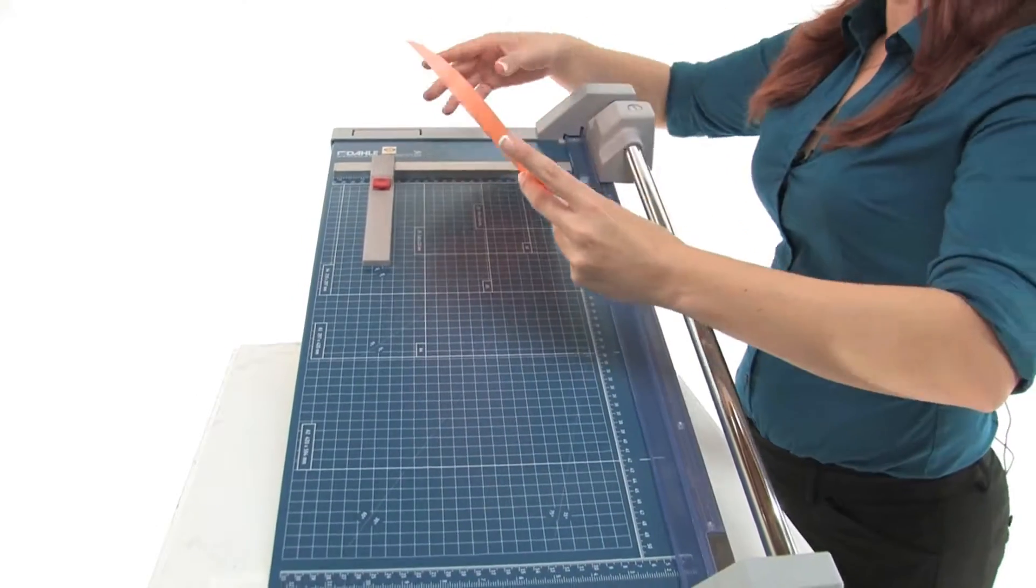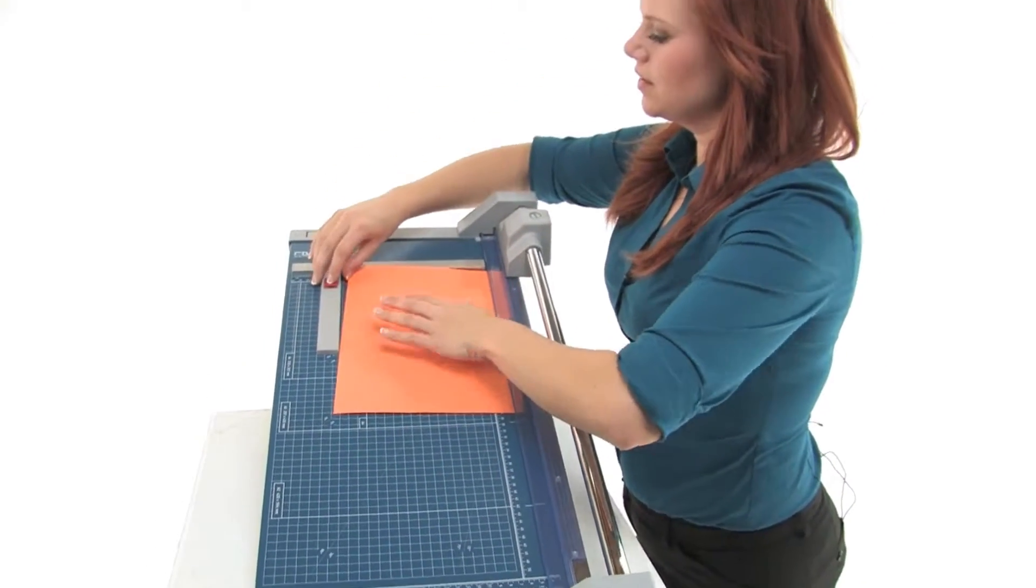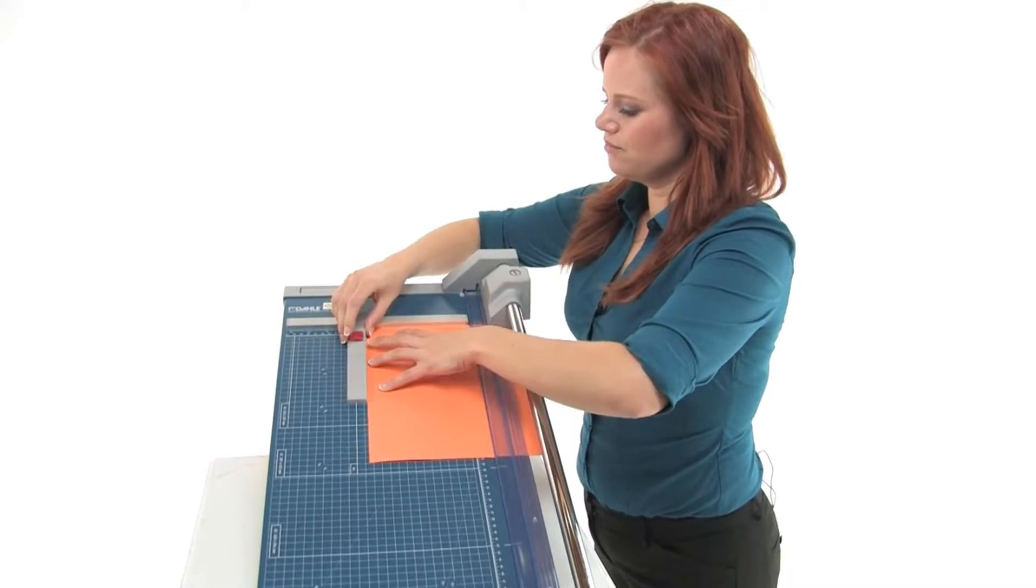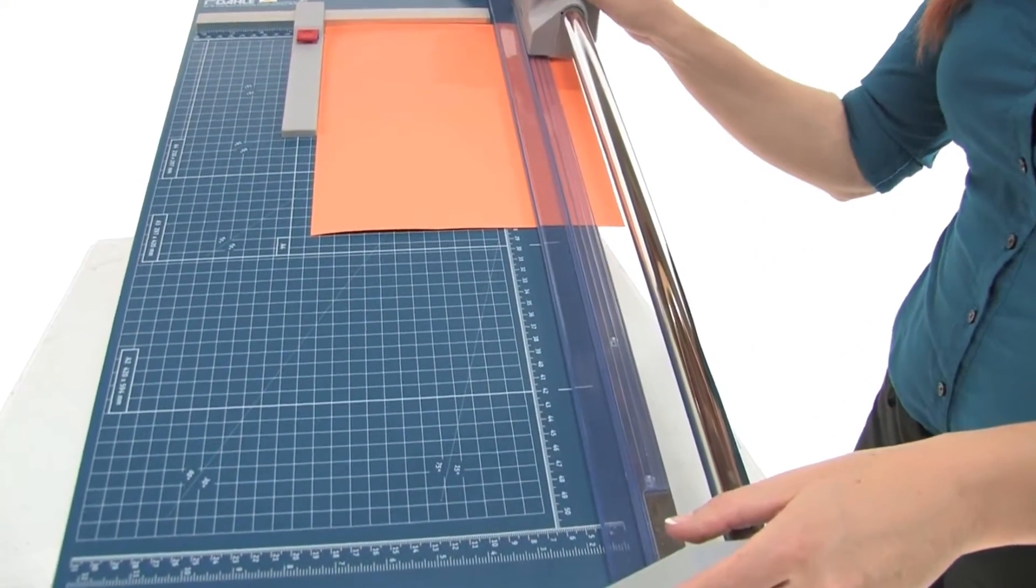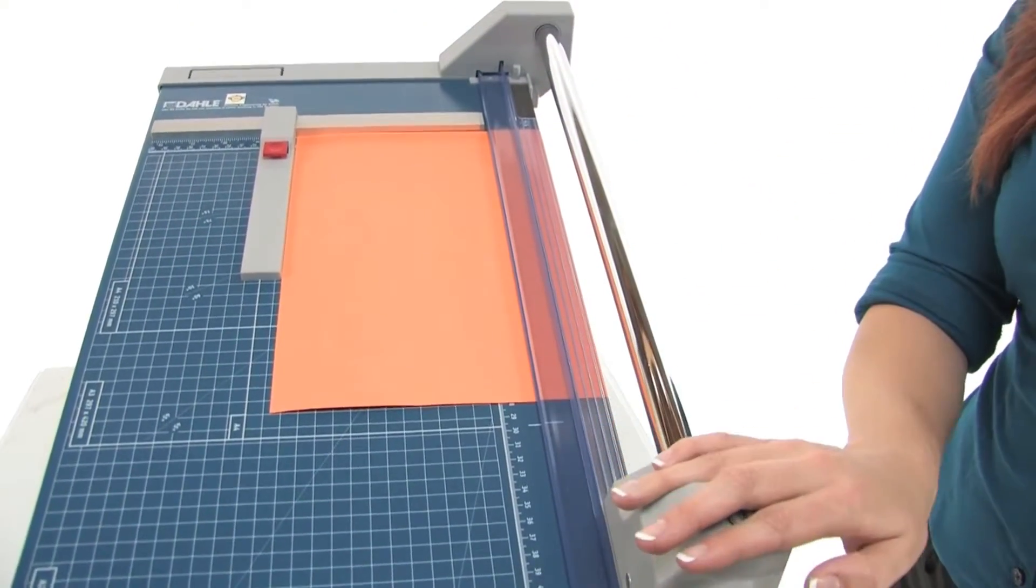Right now I'm going to show you how it works. I'm going to take my paper and adjust my guide, and you'll note that as I cut we have an automatic clamp that holds my work to prevent shifting.